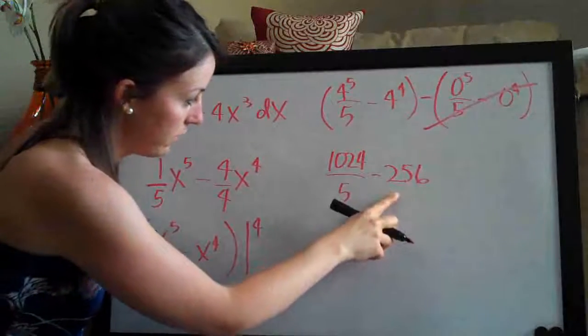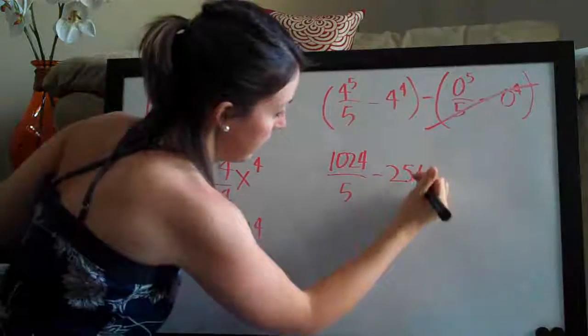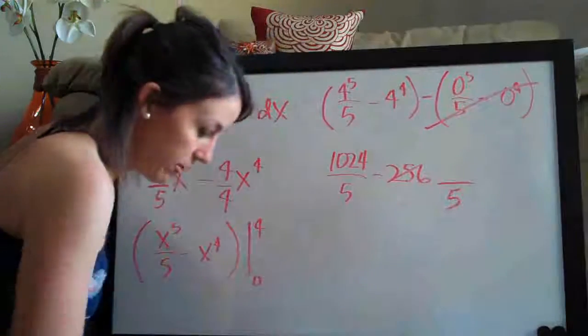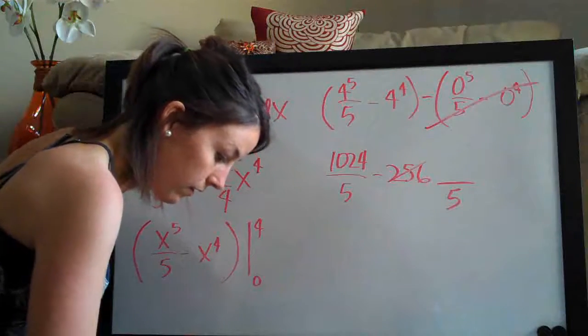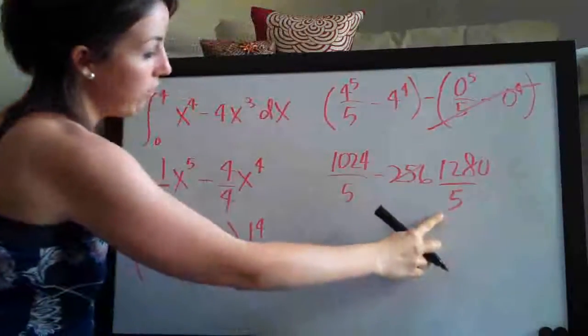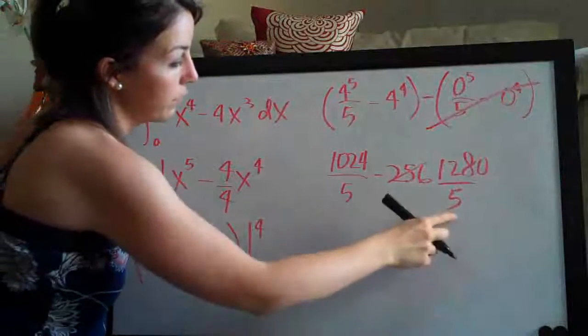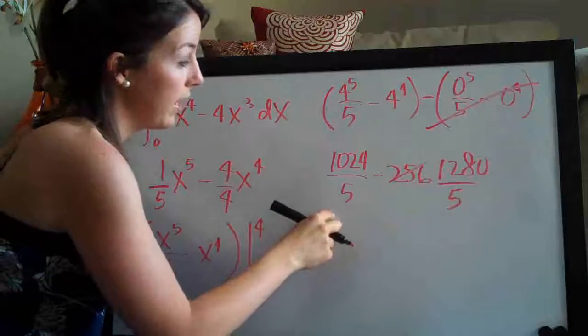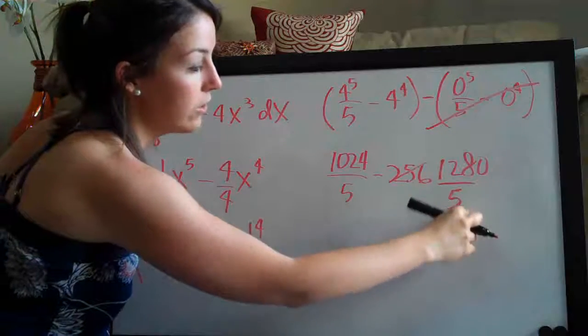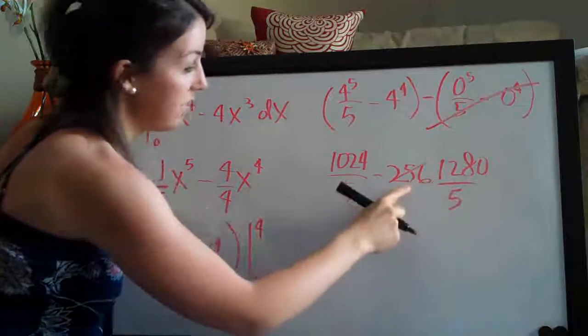And so now what I'm just going to do is change this to be over five and I just multiply 256 times five, I get 1280. So I wanted to put this over five so that we could have a common denominator here and I could combine these fractions. So I multiplied 256 by five such that 1280 over five is the same thing as 256.